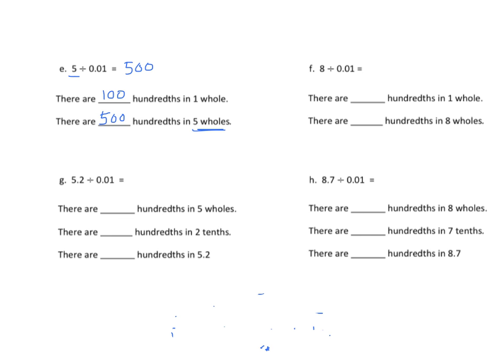Pretty simple. Let's go on to the next problem. Again, we have one-hundred hundredths in one whole, and we have eight wholes, so it would be eight-hundred hundredths — the answer is eight hundred. Now here we have something a little different: how many hundredths are in five wholes? One whole has a hundred hundredths, so five wholes has five hundred.